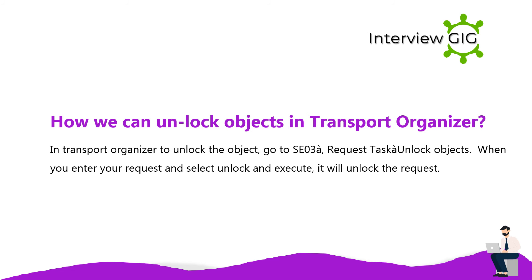How can you unlock objects in the transport organizer? In the transport organizer, to unlock an object go to SE03. Under Request/Task, select Unlock Objects. When you enter your request and select Unlock and Execute, it will unlock the request.